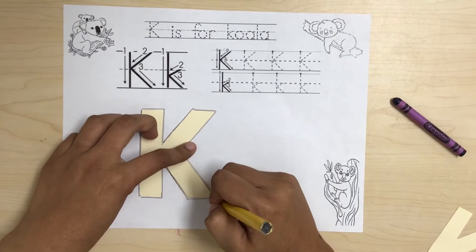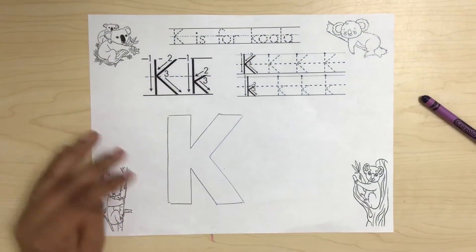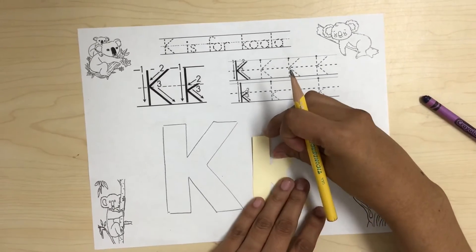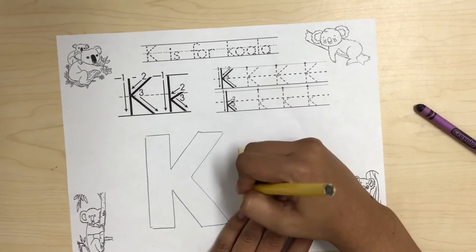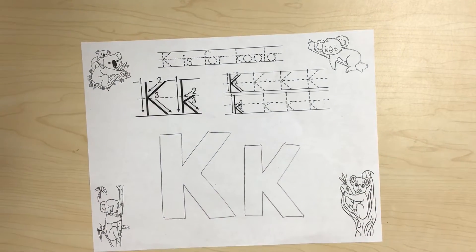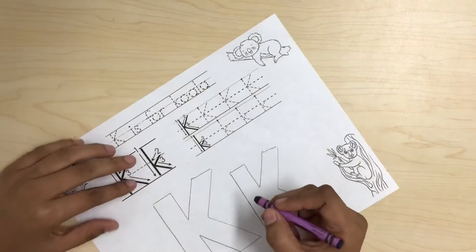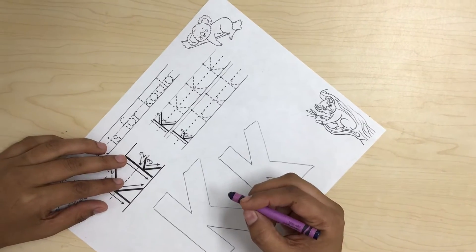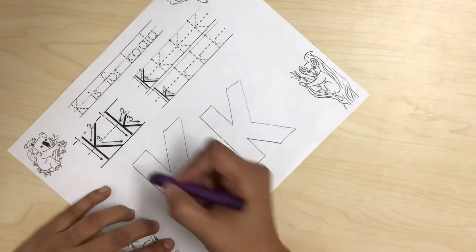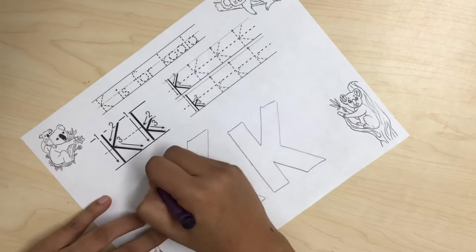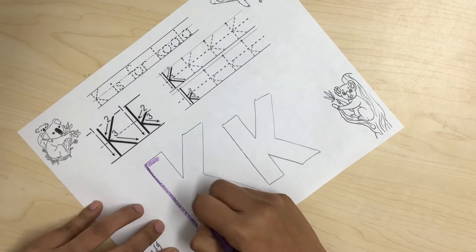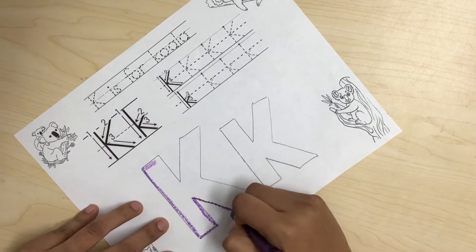After we are done tracing the uppercase letter K, now we're going to trace our lowercase letter K. After tracing our upper and lowercase letter K, we are going to get our crayon and we are going to color our letter K. I'm going to use purple because this month we are learning about our color purple.